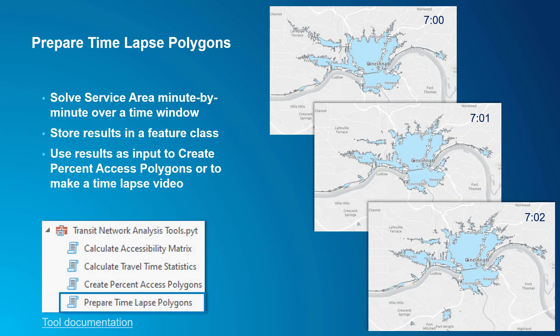We've seen that a service area can change minute by minute, and it's useful to know how the reachable areas change over some time window, like morning rush hour. You could create a service area layer, set the time, solve it, save the resulting polygon, and then repeat the process for every minute during your time window. However, this would be very inefficient and time-consuming. The Prepare Time Lapse Polygons tool does this for you automatically.